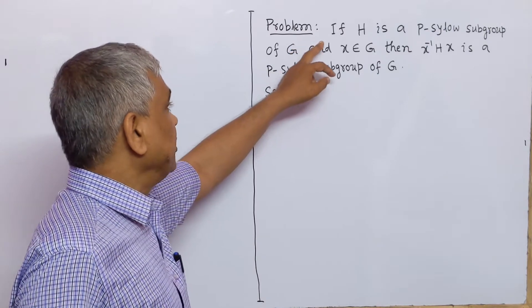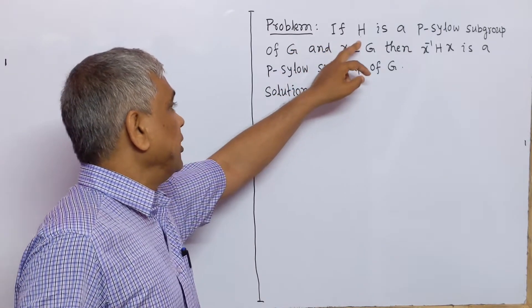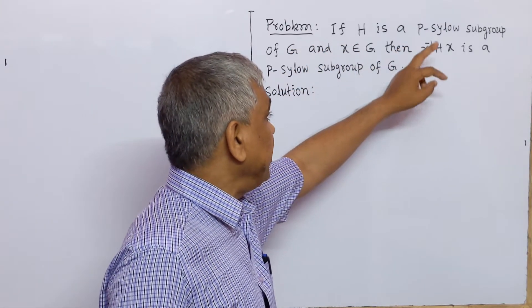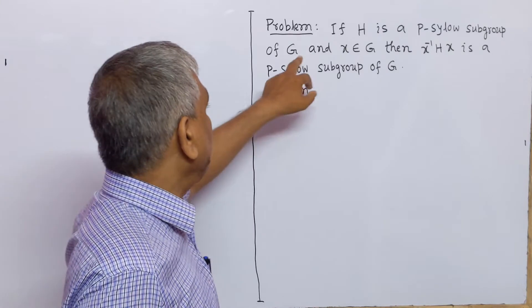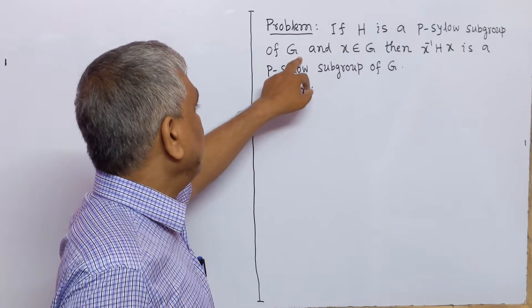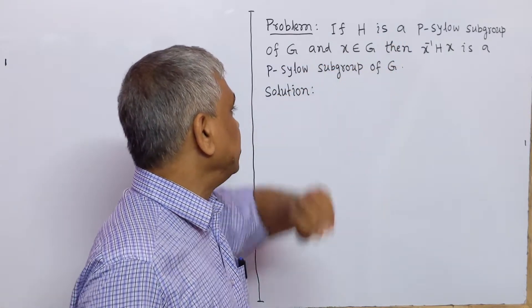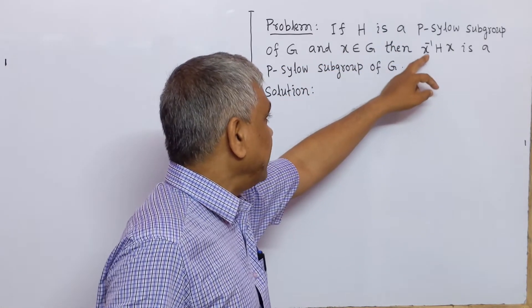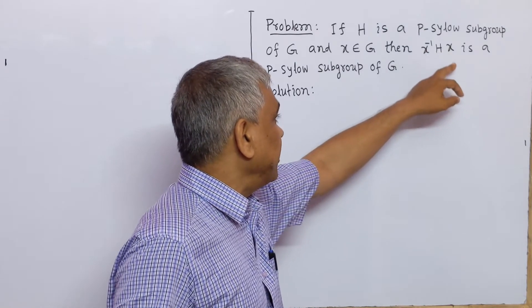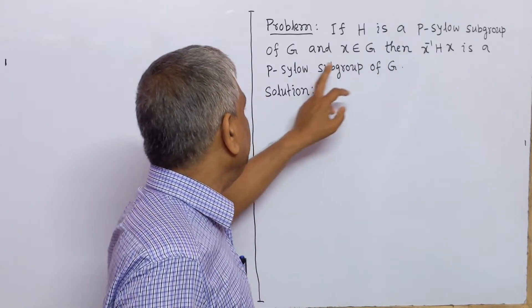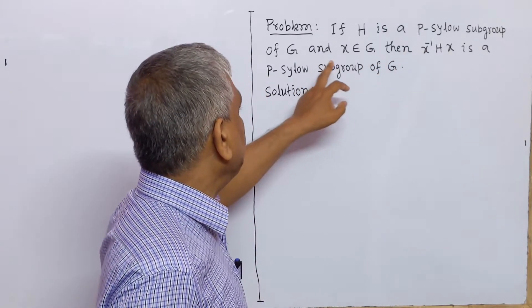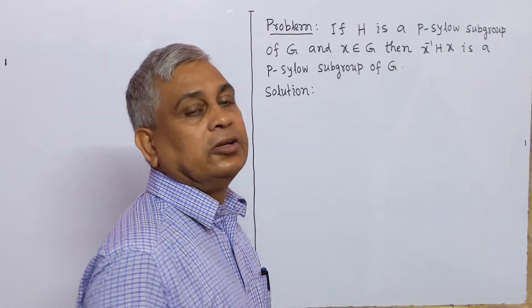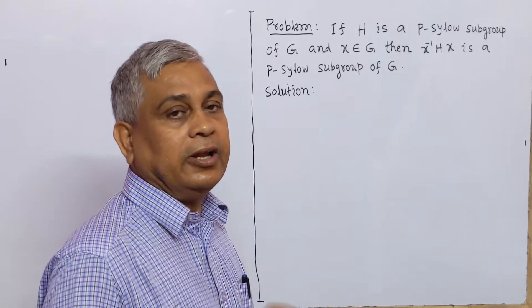The problem is: if H is a Sylow subgroup of G and x belongs to G, then x inverse Hx is a Sylow subgroup of group G.